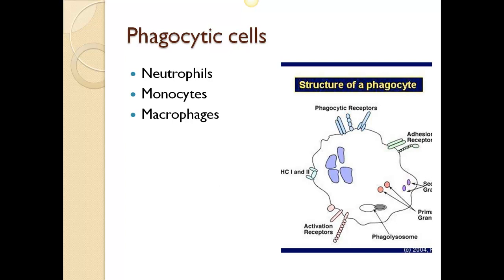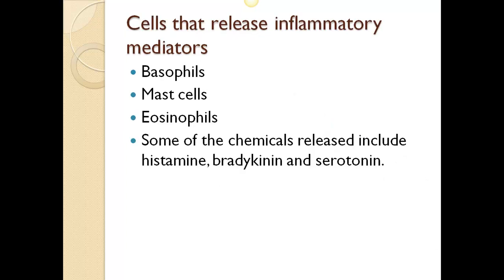One liter of human blood contains about six billion phagocytes. The key phagocytes released are neutrophils, monocytes, and macrophages. Then we have cells that release inflammatory mediators: basophils, mast cells, and eosinophils.